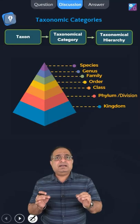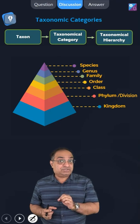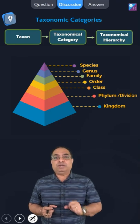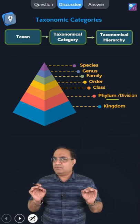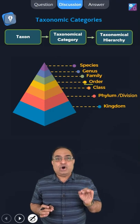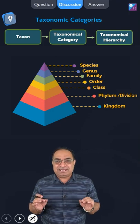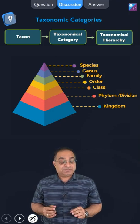There are different taxonomic categories in classification. Which are they? Kingdom, phylum, class, order, family, genus and species.